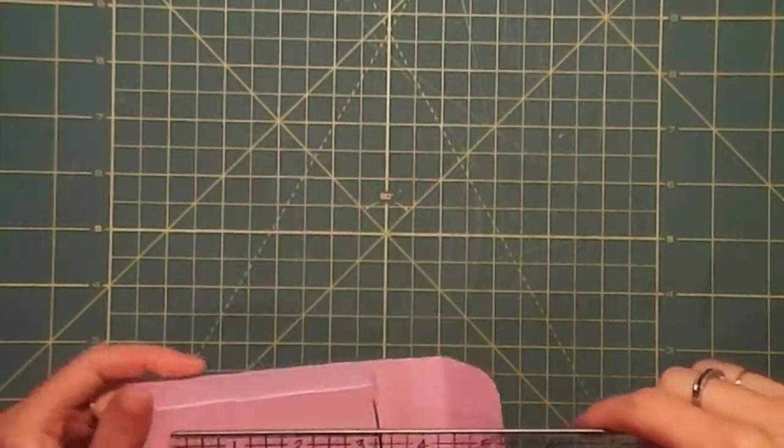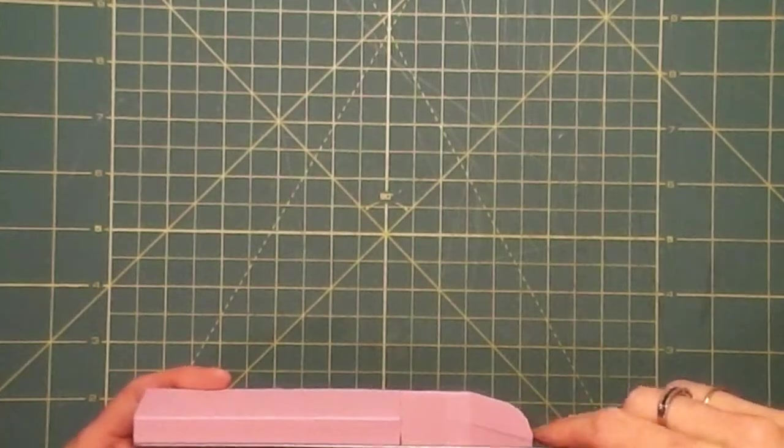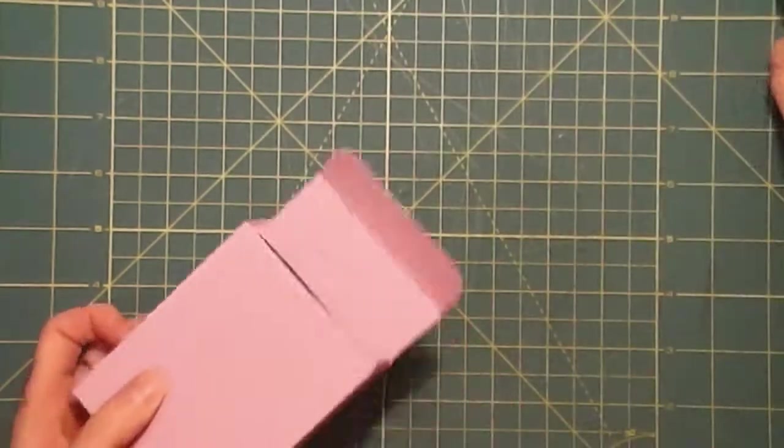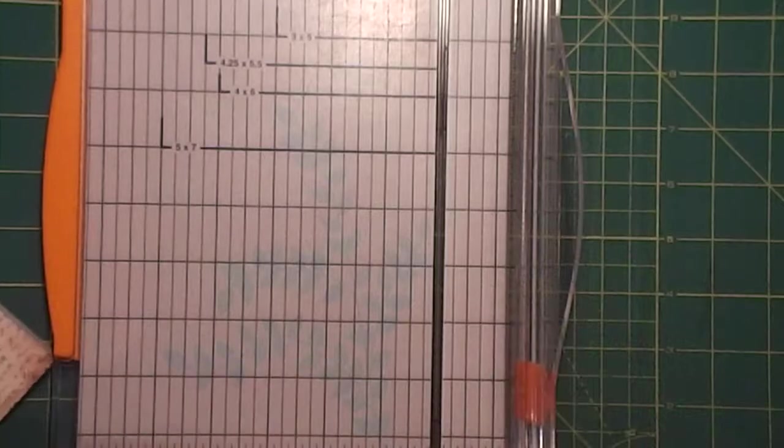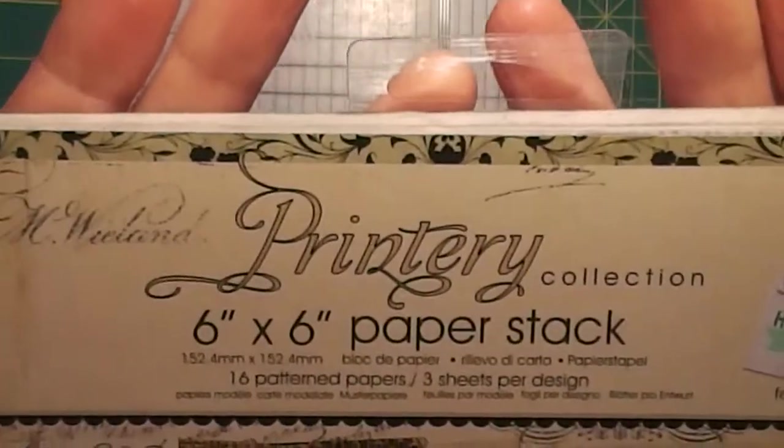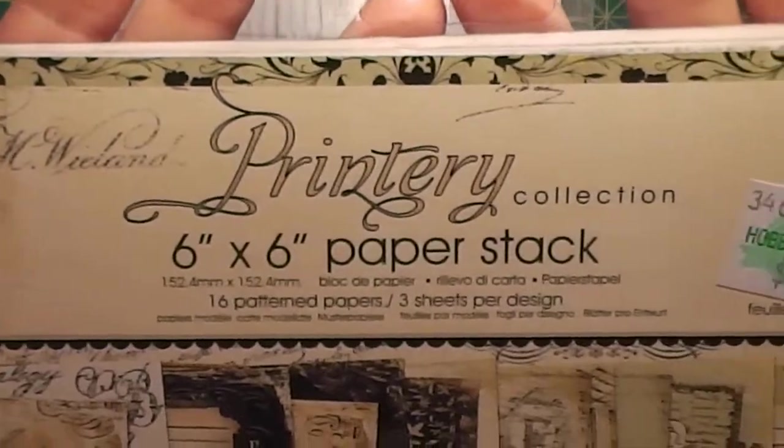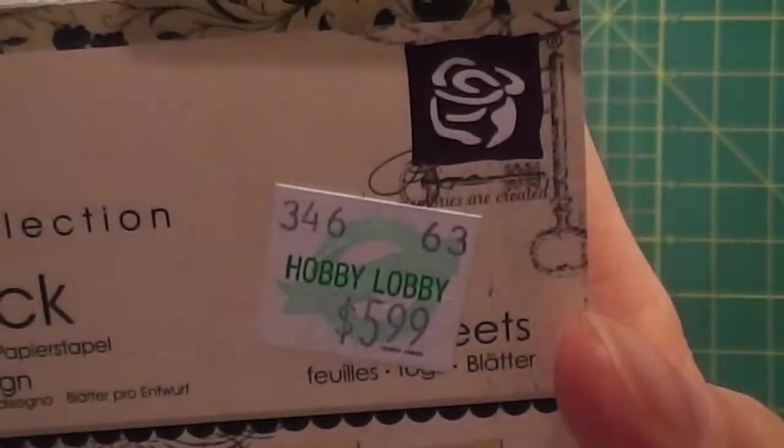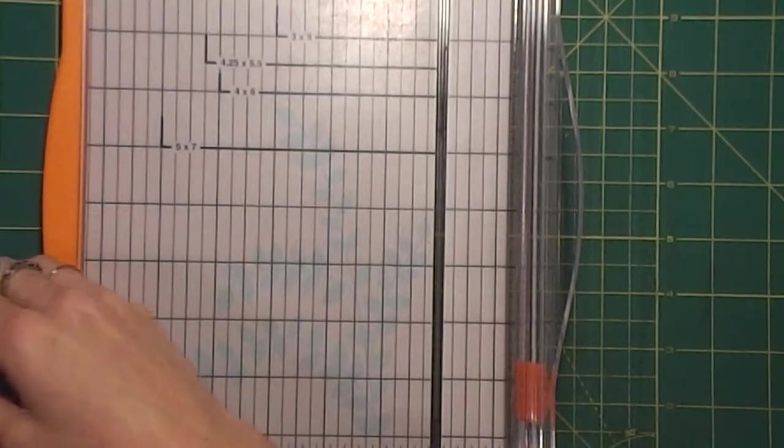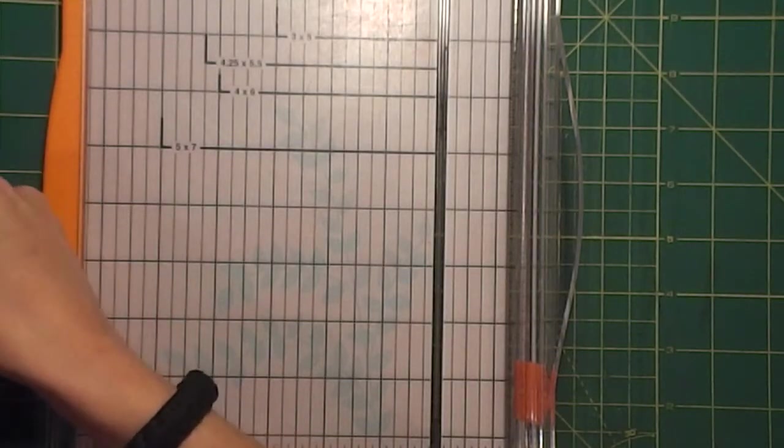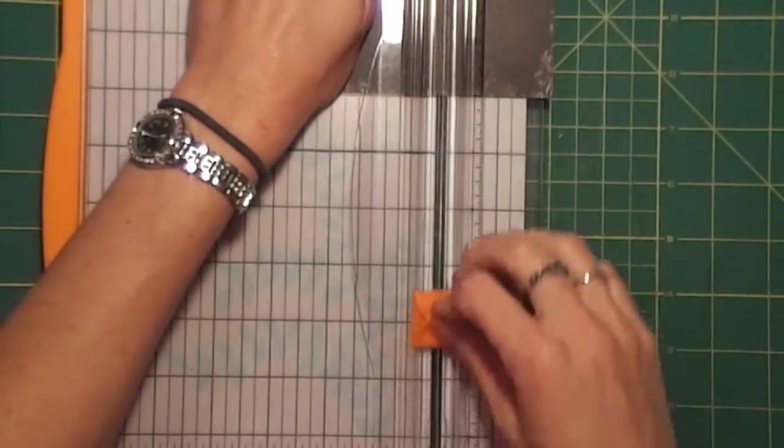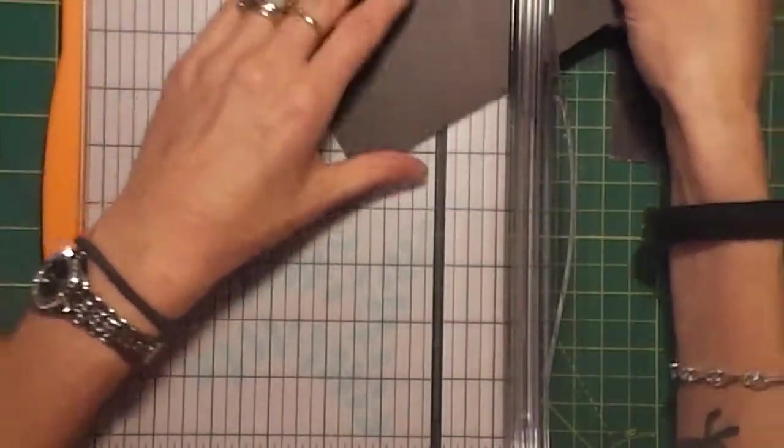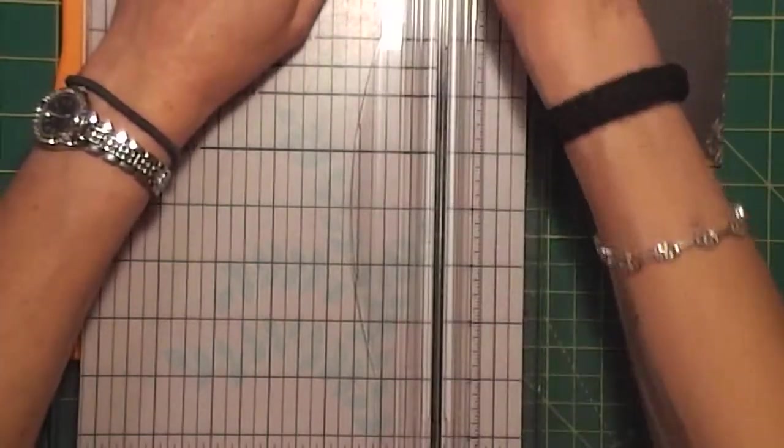So I'm going to remeasure - it's 3 and 1/8 by 4 and 1/8. I'm going to cut it, I'm just going to do 3 by 4, that'll give us an eighth inch. And I'm going to be using Printery collection by Prima. I picked this up obviously at Hobby Lobby when I was in the States this summer.